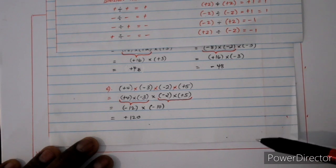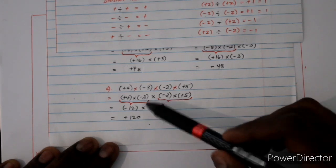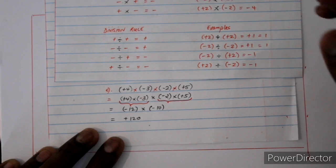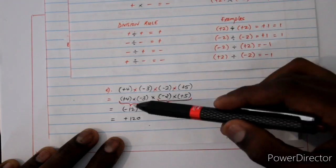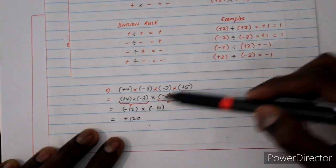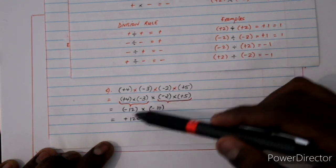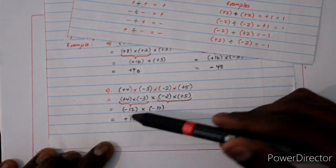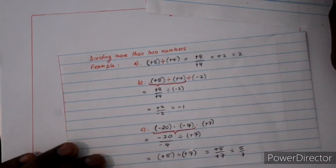For the last one we have four numbers with signs — positive 4 times negative 3 times negative 2 times positive 5. Pair them up: positive times negative is negative, and 4 times 3 is 12, giving negative 12. Then negative 2 times positive 5 — negative times positive is negative, giving negative 10. Finalizing: negative times negative is positive, and 12 times 10 is 120, so the final answer is positive 120.